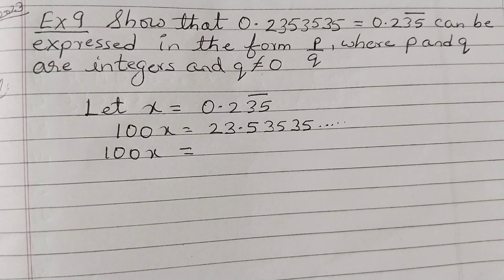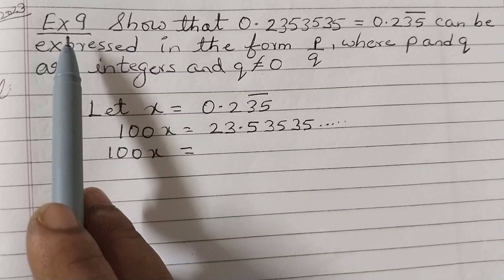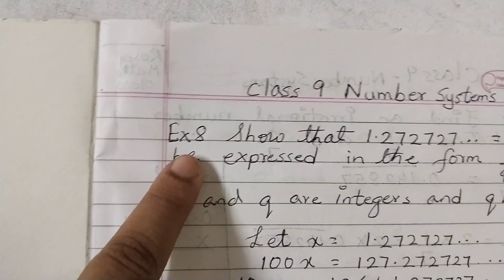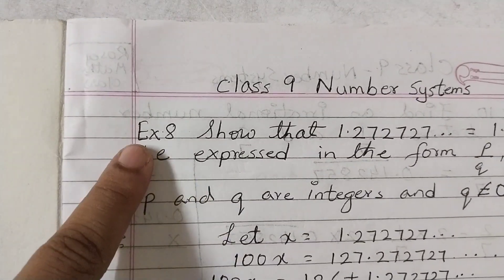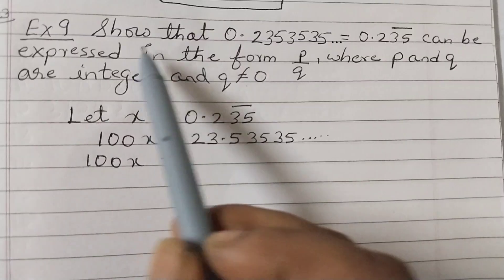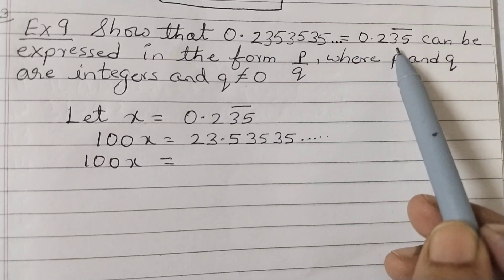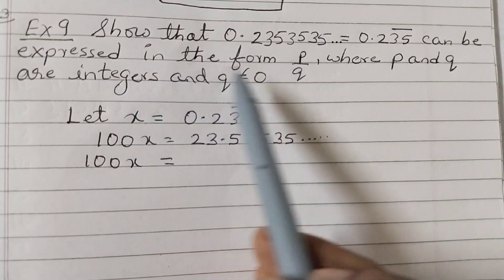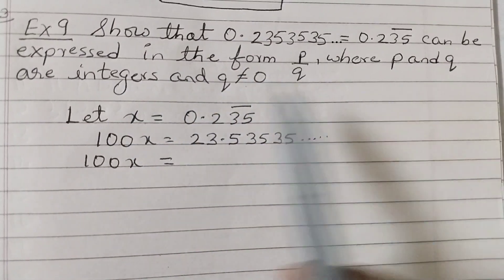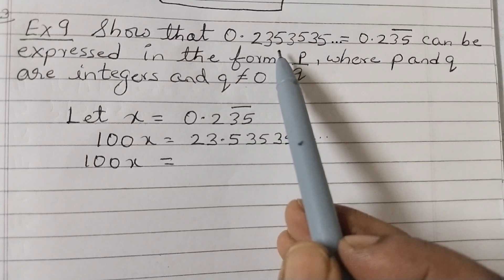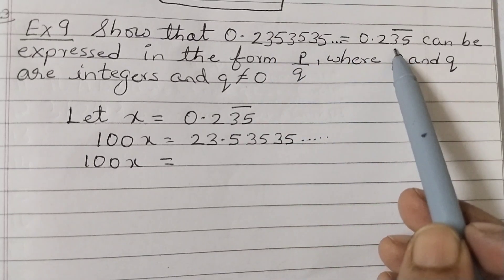Hello students. In this video we shall discuss example number 9 of chapter 1, Number Systems. In the last video we discussed example number 8. Now we are going to discuss example number 9: show that 0.2353535... equals 0.235 with the bar on 35, and can be expressed in the form p by q where p and q are integers and q is not equal to 0. So we have a non-terminating repeating decimal here; the repeating part is 35.